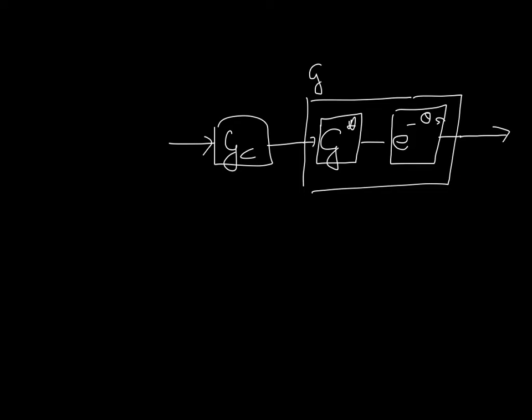Now I've drawn here the controller and the system. I've expanded the system to include now a dead time free part of the model and the dead time written out explicitly. We're going to use this information, this idea that we can separate the dead time in the model out.